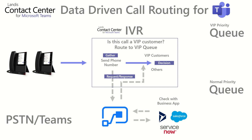The IVR then puts this through a decision. In our case, the call is a VIP caller and it will be sent to the VIP queue. In other instances, it might go to a normal priority queue.